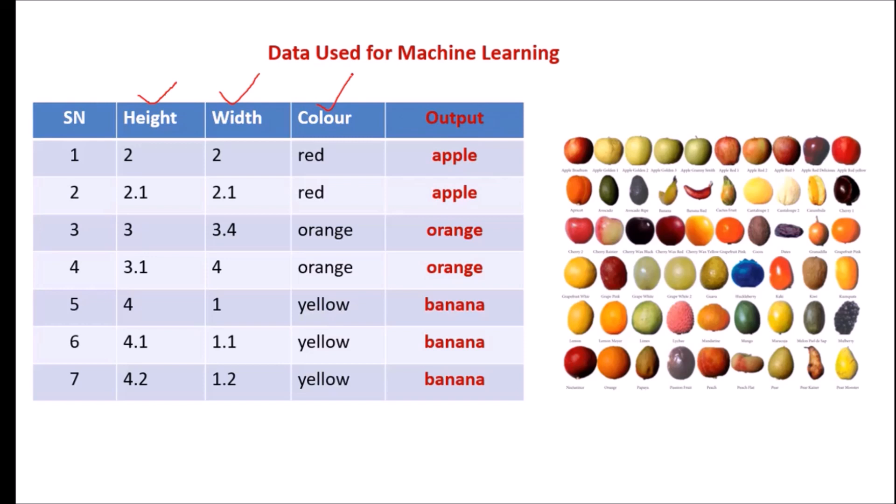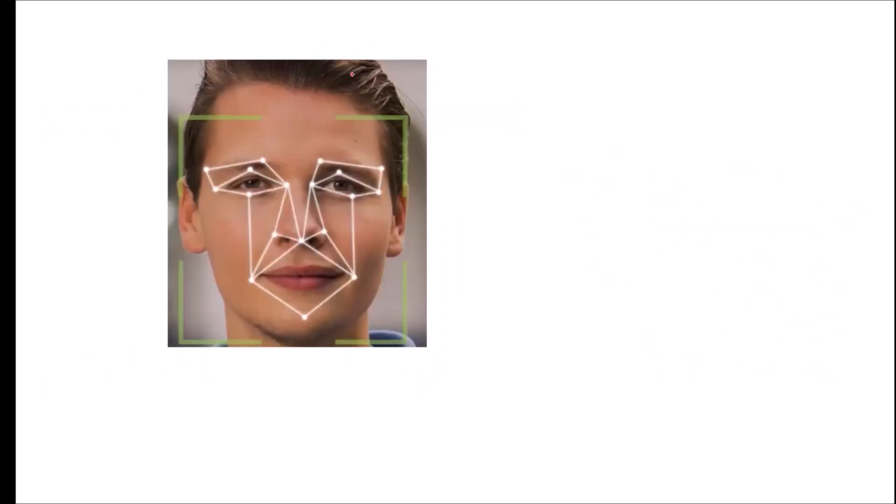So in supervised machine learning, we will have one column as an output also during the training phase. You may have a lot of features depending upon your application. For example, to identify the person from their image, you may use hundreds of features.